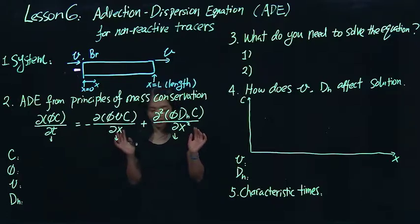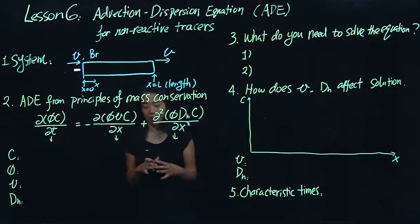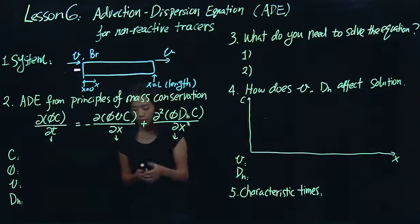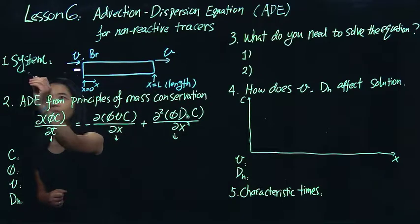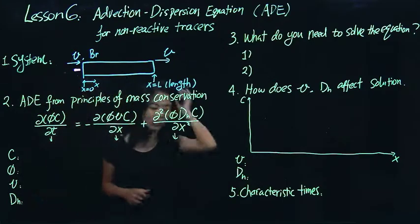So what we have, thinking about this, is let's say you have chemicals that are non-reactive, right? So the system you have, what we use as an example is a column. So think about, for example, you are doing an experiment.